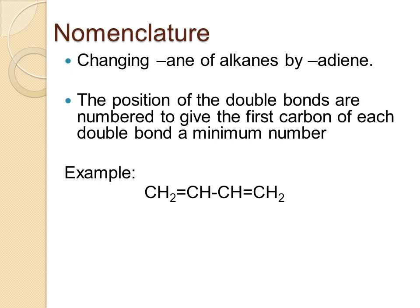Let us understand this with an example: CH2=CH-CH=CH2. Here we have 4 carbon atoms, so it should be a derivative of butane. The double bond is at the first carbon and the third carbon, so the name will be 1,3-butadiene. 'Ane' is replaced by 'adiene', so the name becomes 1,3-butadiene.